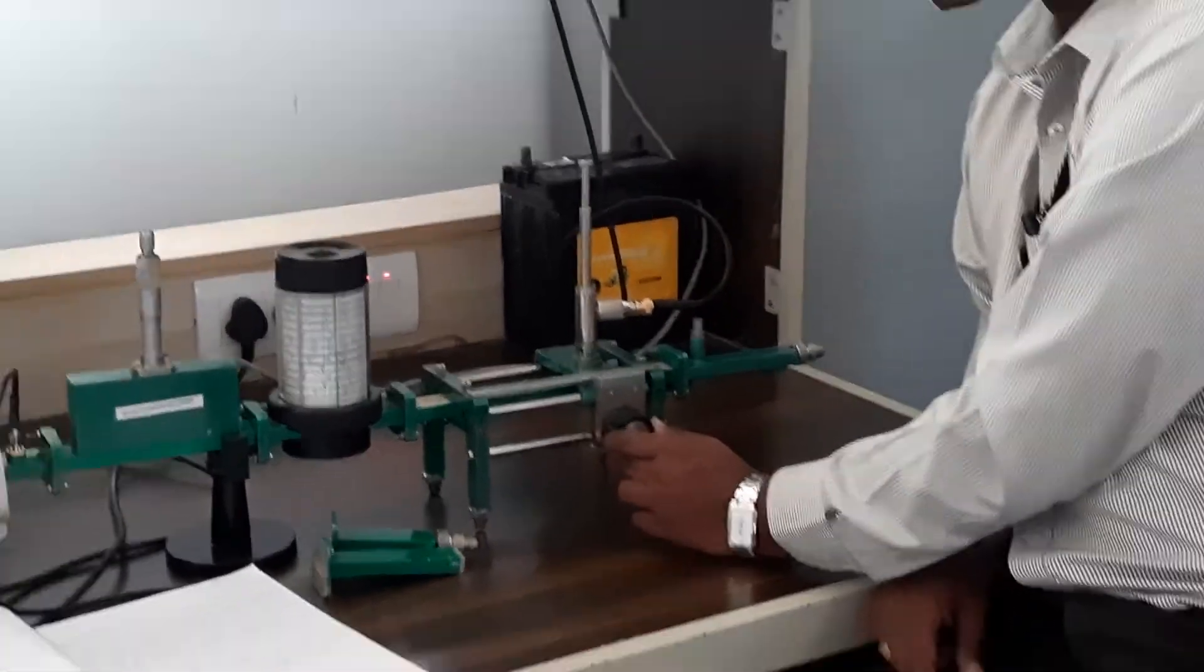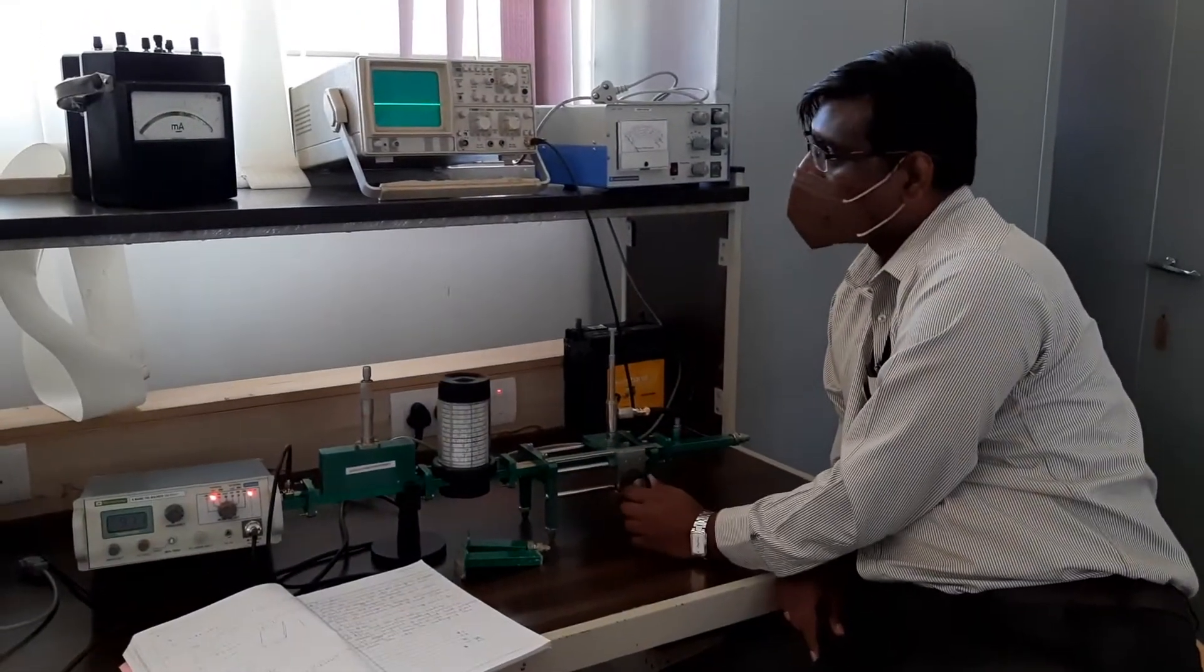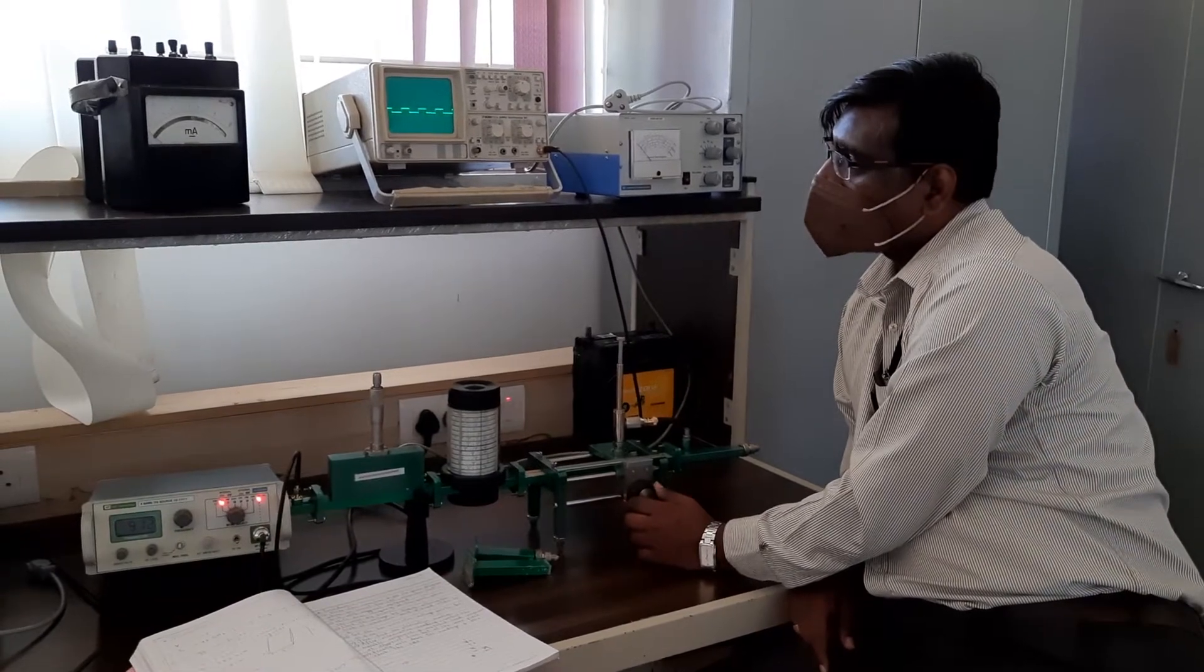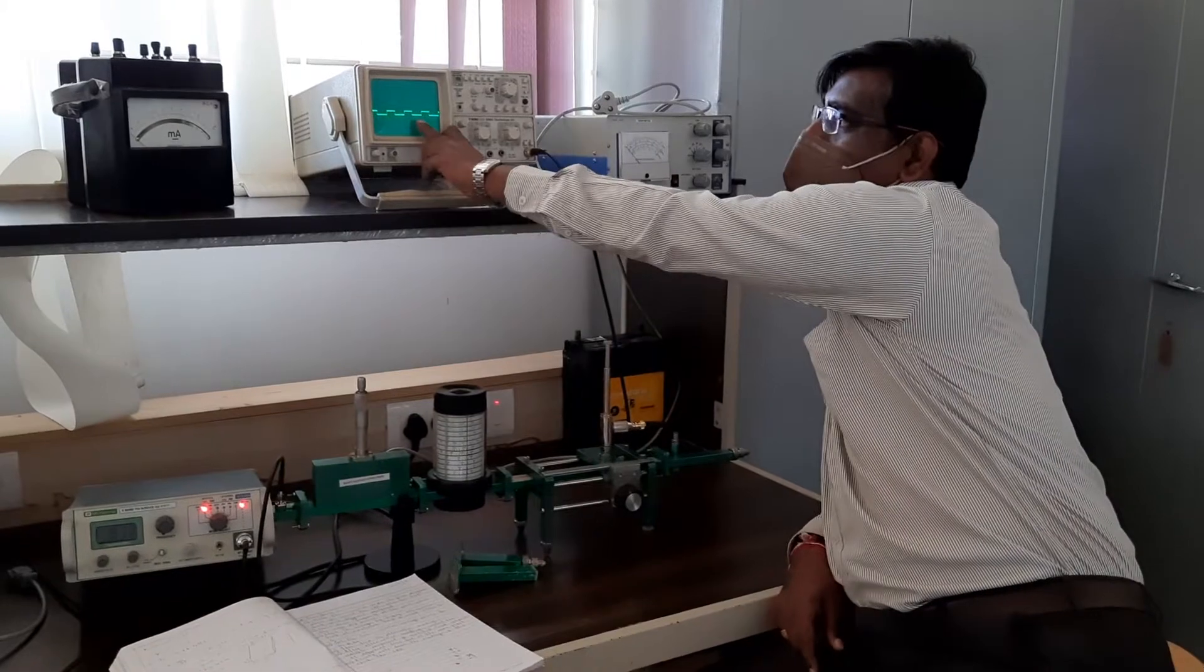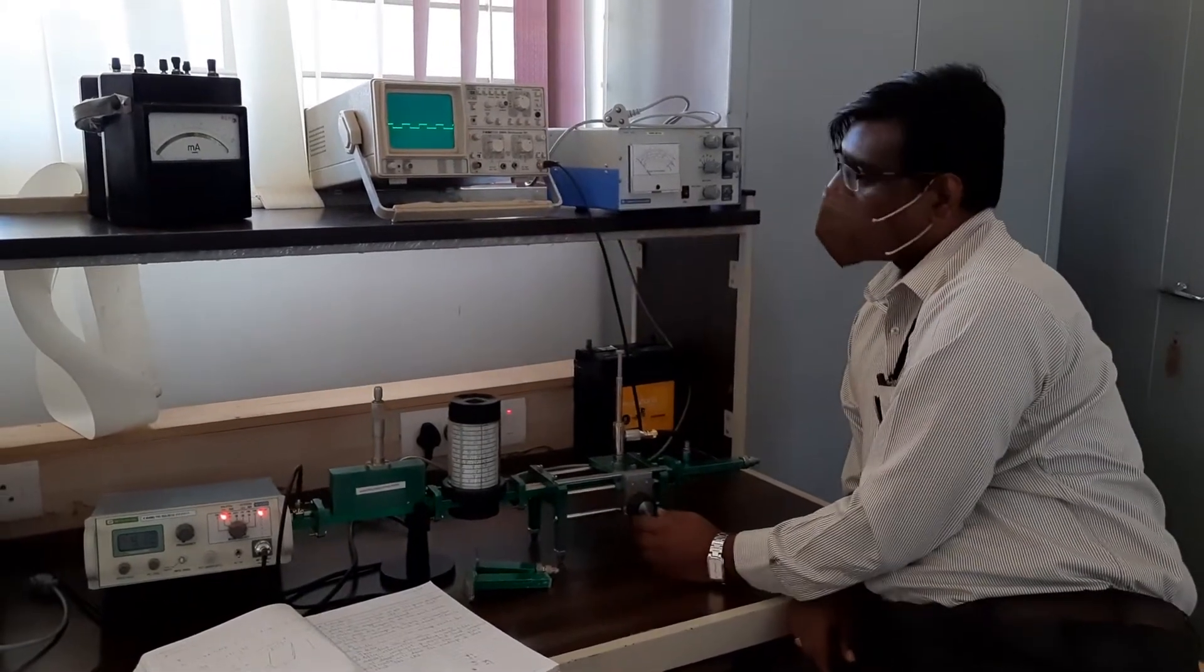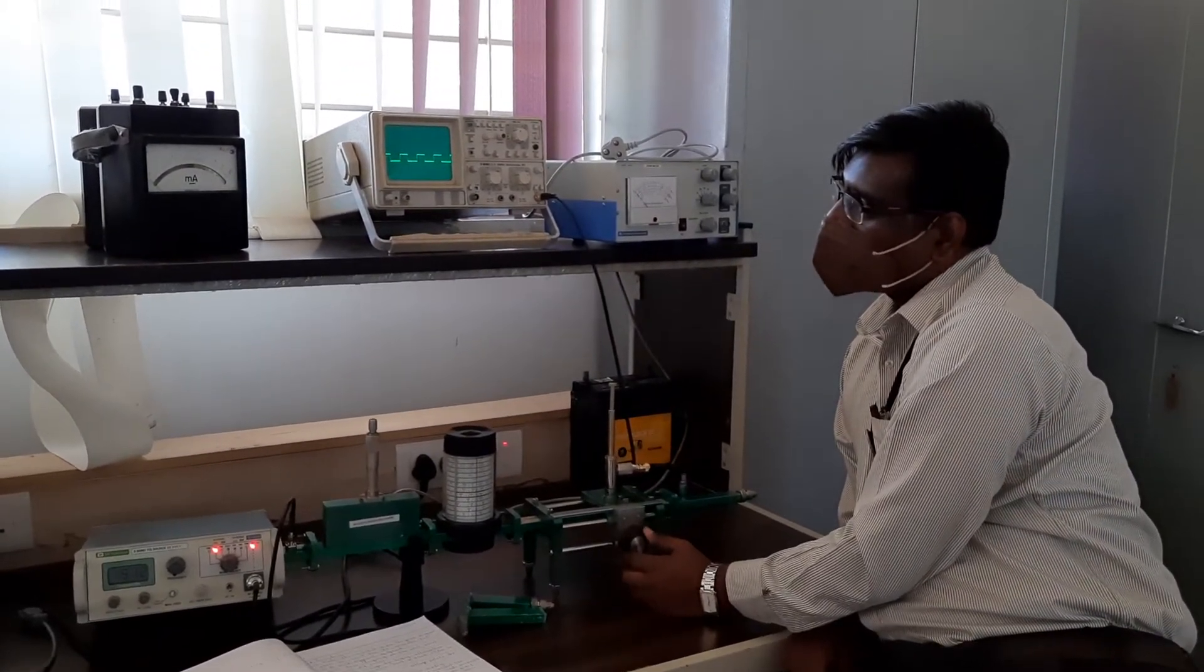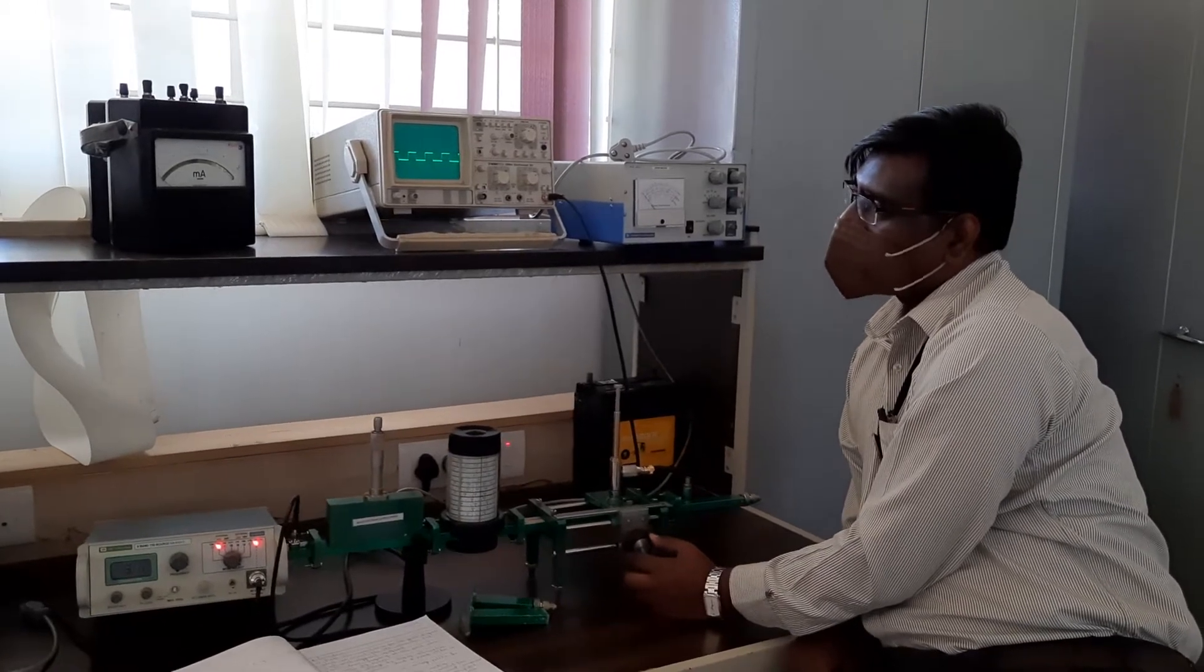So now I will rotate it slowly, I will move it slowly and identify where maximum value I will be getting. So here you can see that there is no change happening at this point. This is the maximum value what I am able to get. So this is V max value.